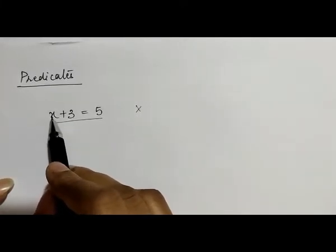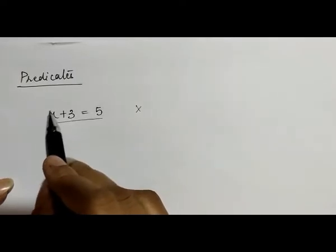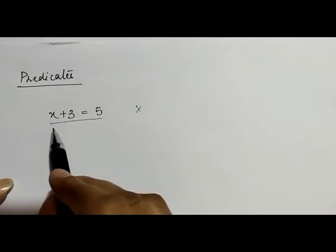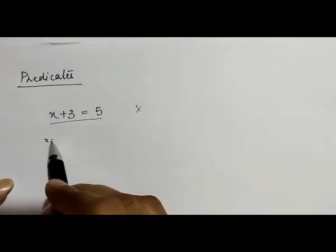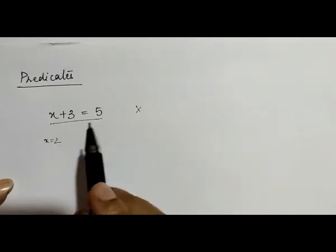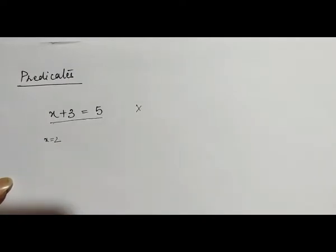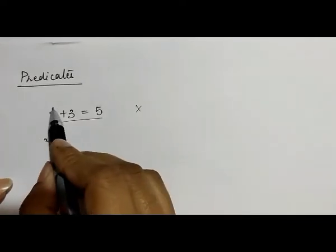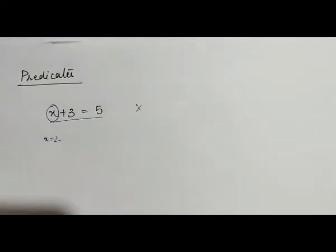If we assign any value to the x, this variable, suppose if I am assigning a value x equals to 2 here, this becomes 2 plus 3 equals 5. Then only we can determine whether the statement is true or false. But without having a value for this variable, we cannot determine whether a proposition is true or false.